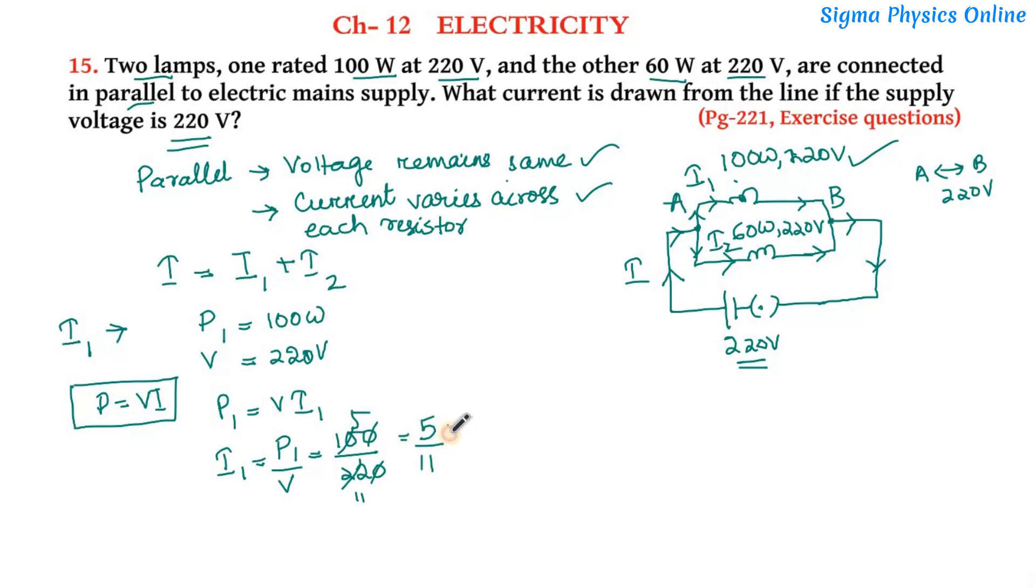So the current flowing through the first bulb is 5 by 11 ampere. Now similarly let's find out the current flowing through the second lamp. So again P2 is 60 watt and V is 220 volt. So I2 will be P2 by V which is 60 by 220 that is 3 by 11 ampere. So I2 is 3 by 11 ampere.